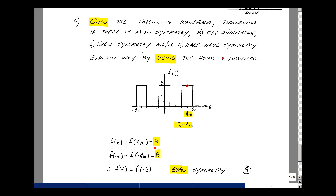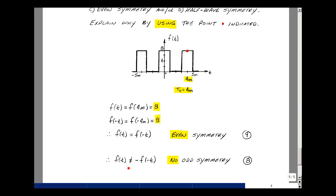I'll take a look at f(-t). That would be at minus four milliseconds, and that would also be equal to eight volts. f(t) is equal to f(-t). That's one of our definitions for even symmetry. Now that's clearly not equal to the negative of the value that's here, so no odd symmetry.